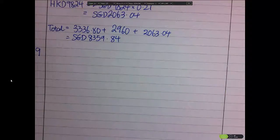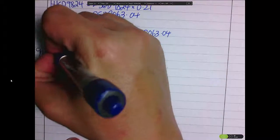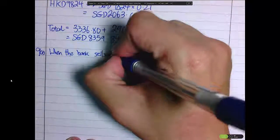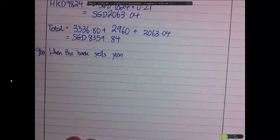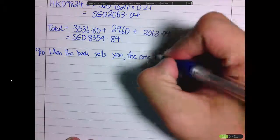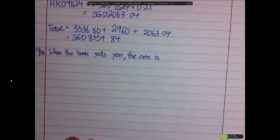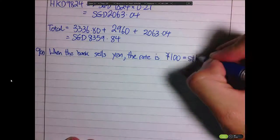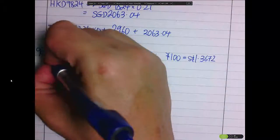Basically when the bank sells Japanese Yen to a customer, it means that you bring Singapore dollars to the bank, and the bank will give you 100 yen for $1.3672. So when the bank sells Yen, the rate is 100 yen equals to $1.3672.